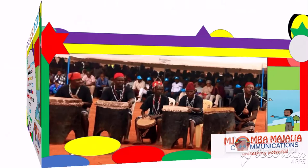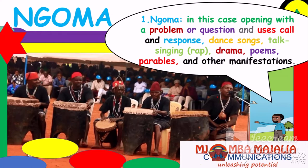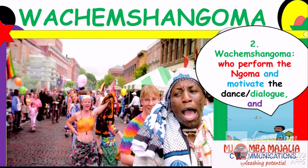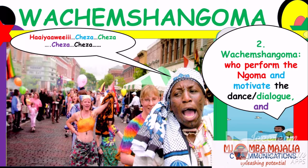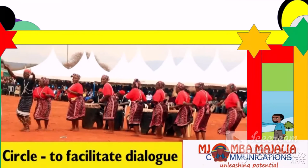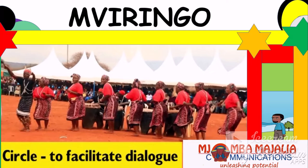The first channel is Ngoma, where there is drumming that opens with a problem or question, using call and response — it can be a dance, song, talk, singing, drama, and other manifestations. The second is Mchemshangoma, the person who performs the Ngoma and motivates the dance or dialogue. Like an animator, they call and the dancers respond. In Ngoma Diche, this is the person who promotes and triggers dialogue and sets the questions. The third is Mbirengo or Sapo, who is called to facilitate dialogue.